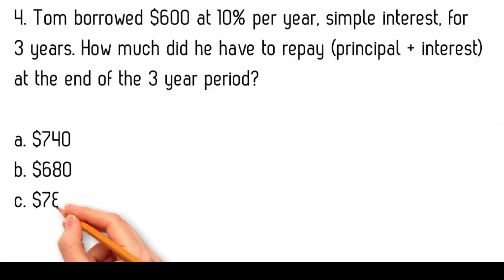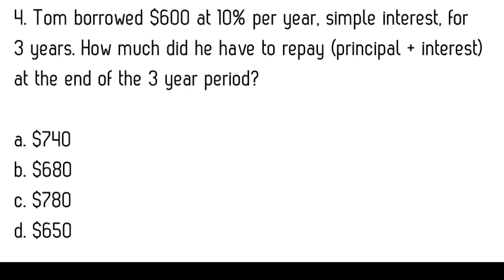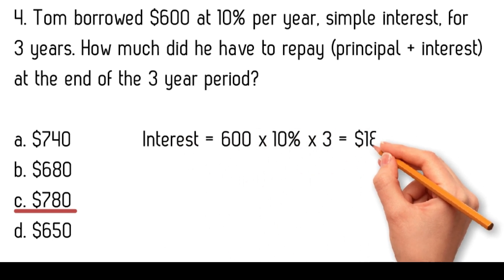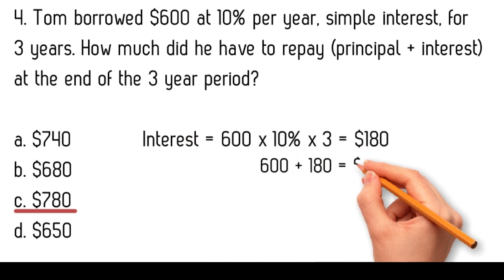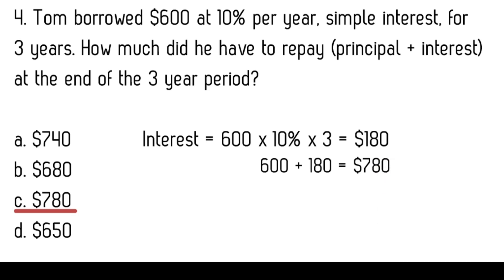Tom borrowed $600 at 10% per year simple interest for 3 years. How much did he have to repay, principal plus interest, at the end of the 3-year period? $740, $680, $780, $650. The interest to pay is: interest equals 600 times 10% times 3, equals $180. Total to repay is 600 plus 180, equals $780.